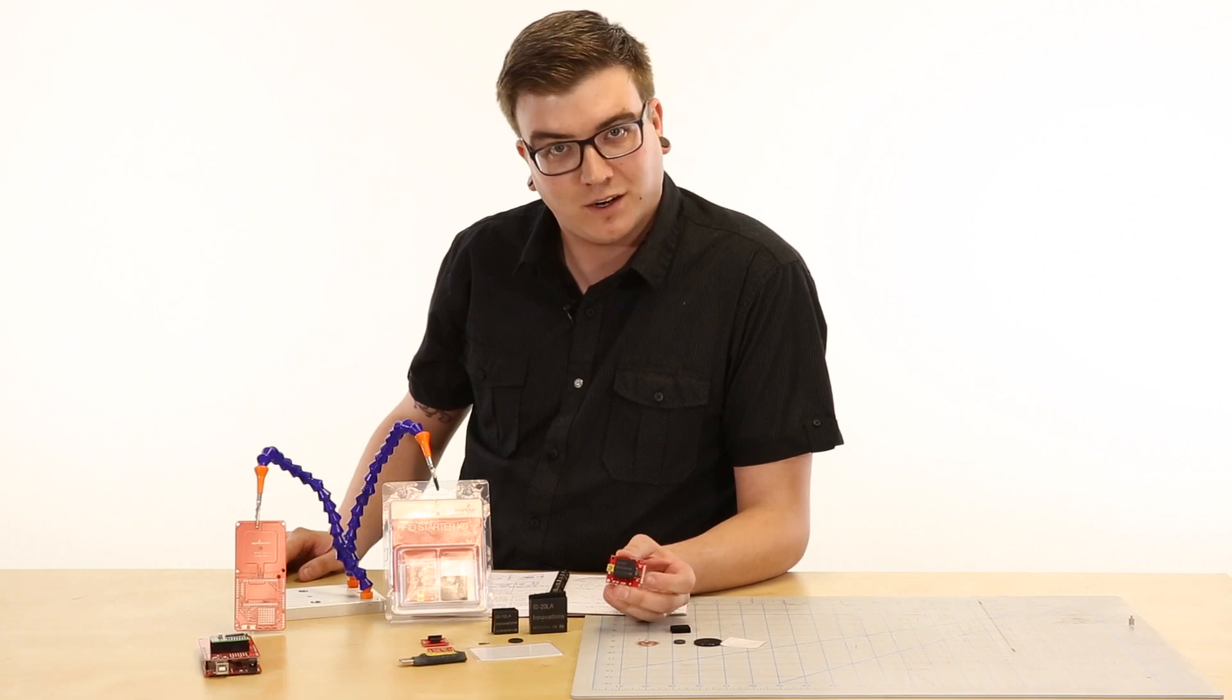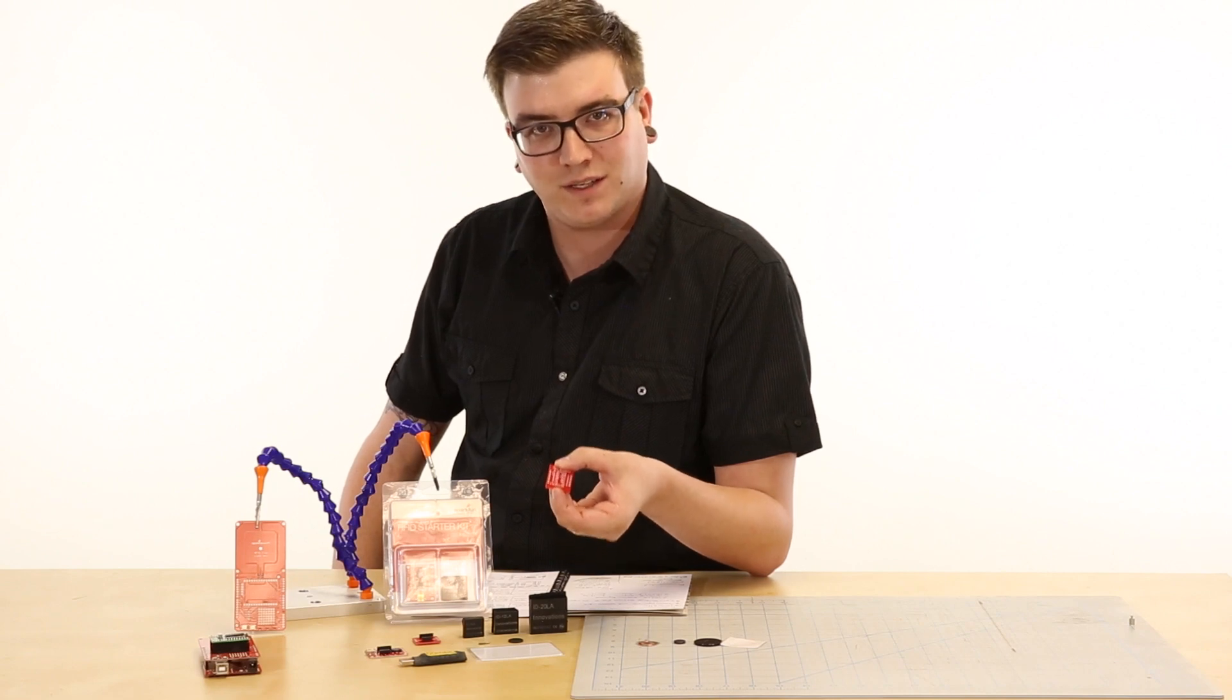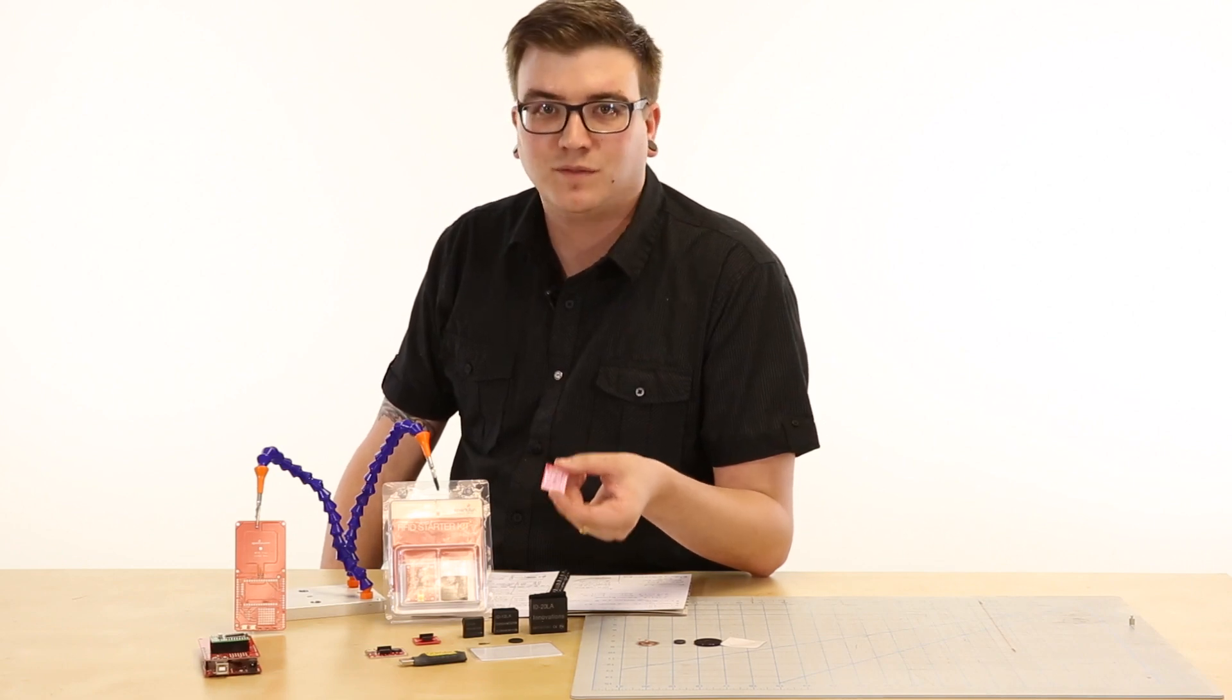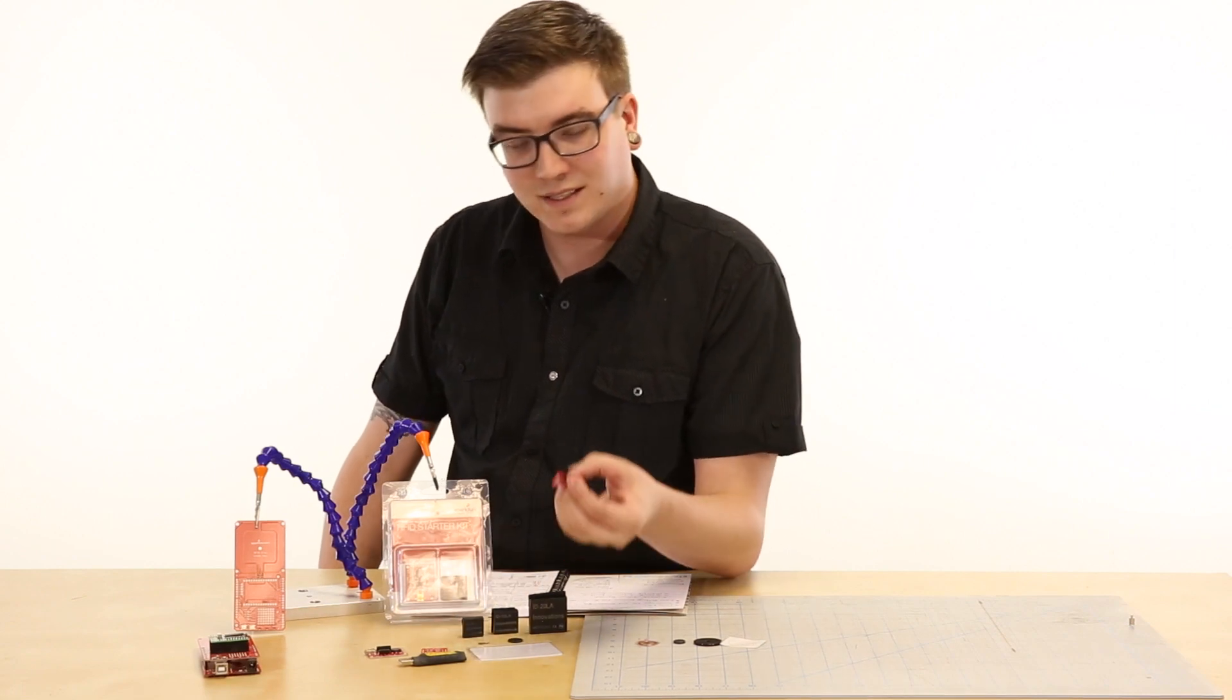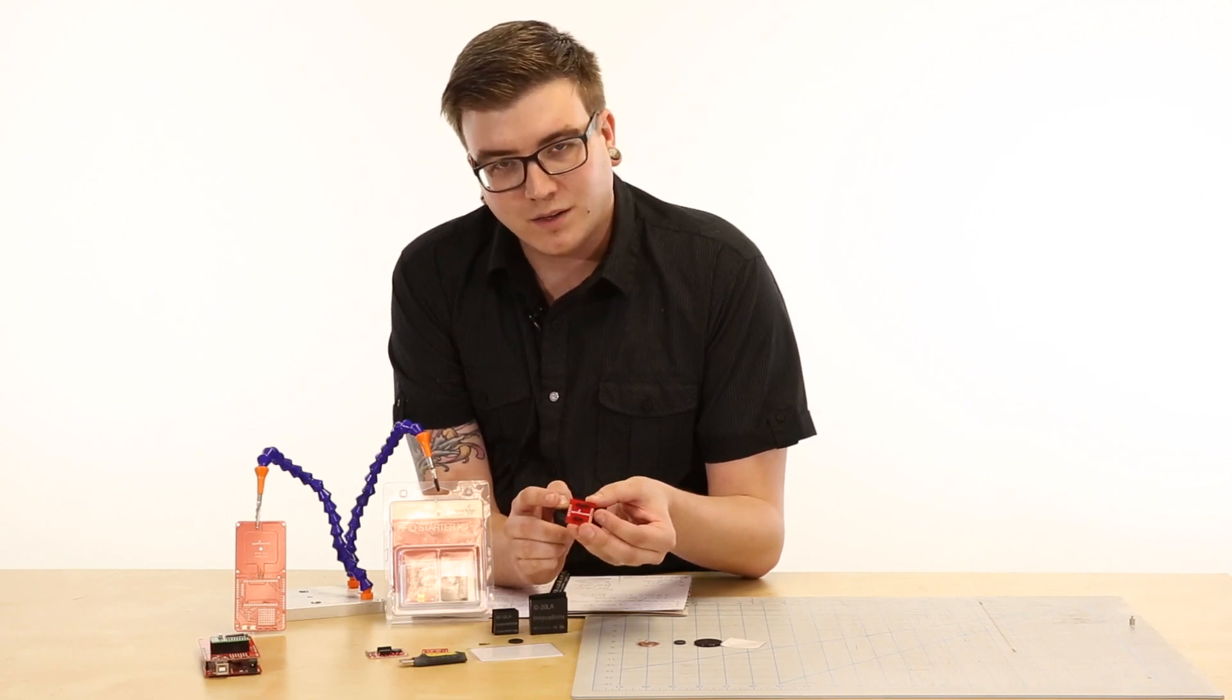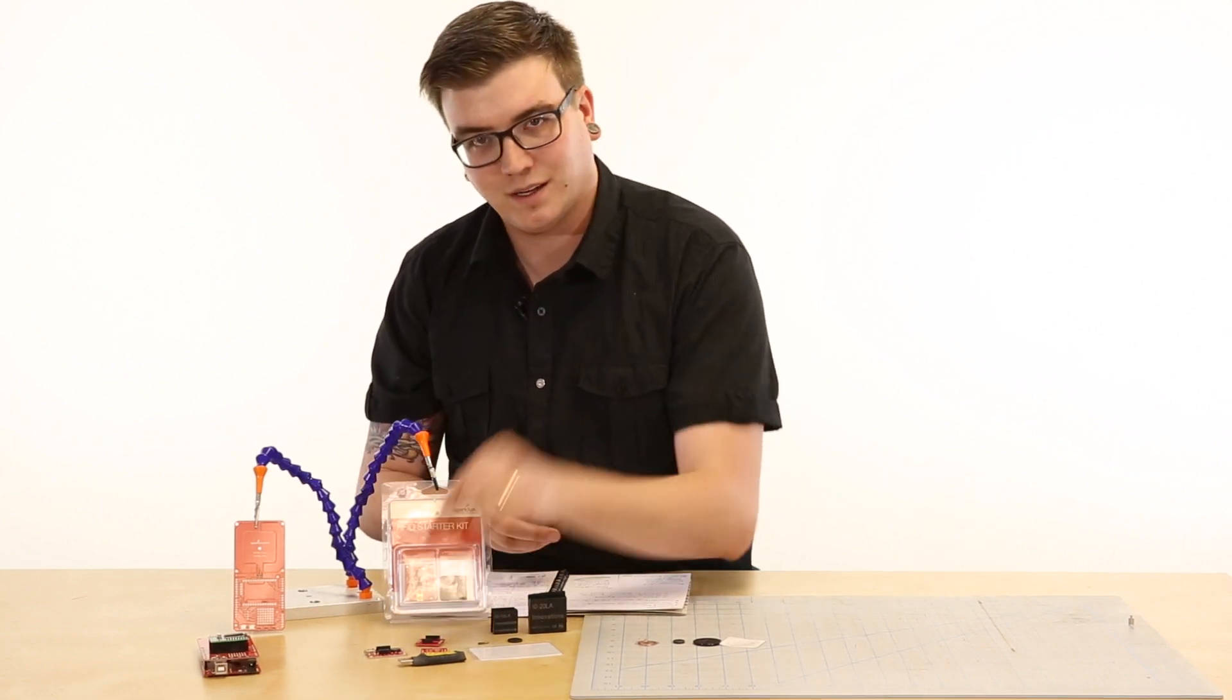Additionally, I wanted to point out that we do sell a basic breakout for the ID series of readers. This is great if you really want to have hands-on control of all of the situations that you plug this into. This breaks out all of the pins that the ID reader has and gives you access in a standard 0.1 inch breadboardable spacing. One tip that I want to make for you on this, though, is that instead of soldering directly to the board and forcing your module to be permanently mounted, you should take what we sell as XBee 2mm headers, cut those down to size, and solder them to this board. Then you have a temporary mount so you can remove your module in case you need to repair or replace it.